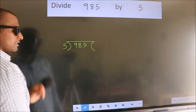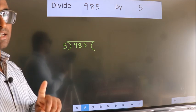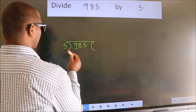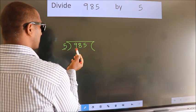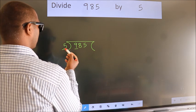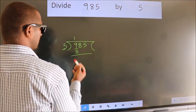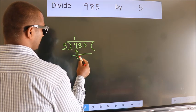This is your step 1. Next, here we have 9, here 5. A number close to 9 in 5 table is 5 once 5. Now, we should subtract. We get 4.